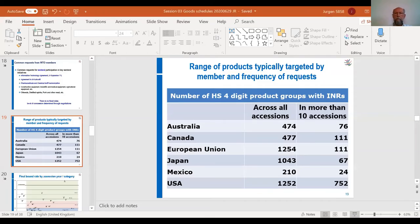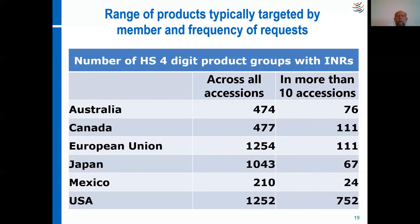Coming back to the point of knowing your trading partners well — remember Eric talked about the INRs, the initial negotiating rights, which basically reflect the specific interest that negotiating partners have in the negotiations for products for which they want to reserve the right to be at the negotiating table in case a WTO member would like to raise the duties above the agreed boundaries.